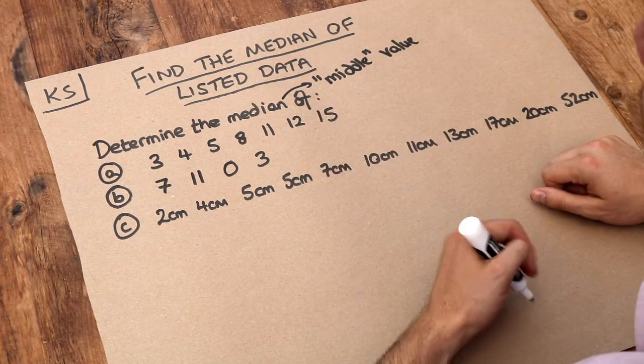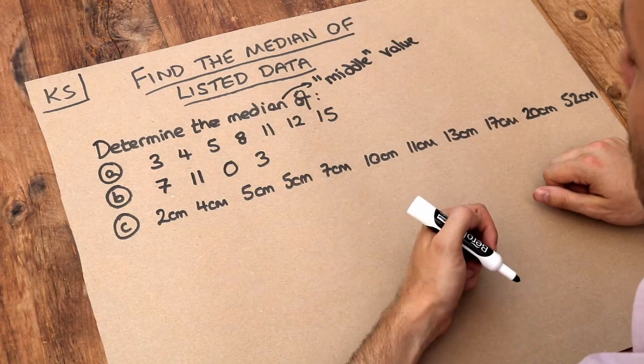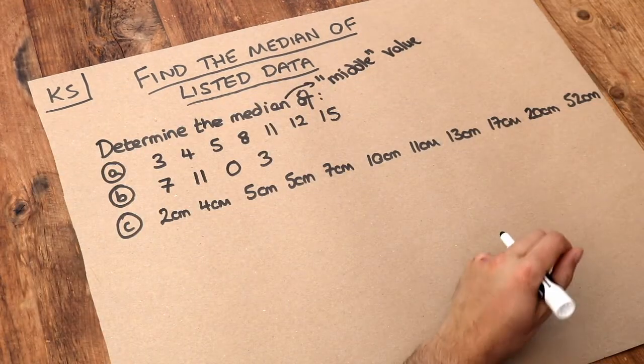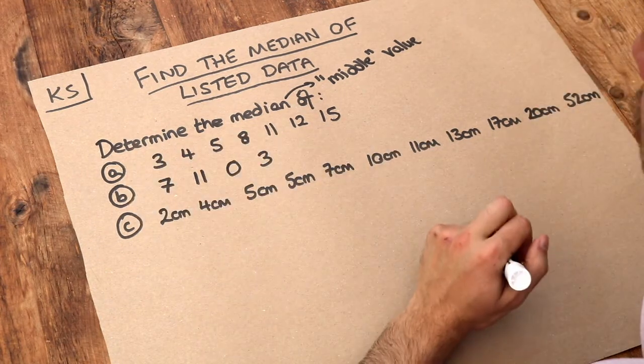For example, if we wanted an average salary of people in England, what we might do is order everyone in ascending order of salary and just pick the middle person, because the middle person would be the average Joe, the average person.